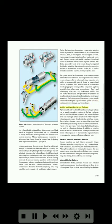Muffler and heat exchanger failures: approximately half of all muffler and heat exchanger failures can be traced to cracks or ruptures in the heat exchanger surfaces used for cabin and carburetor heat sources. Failures in the heat exchanger surface, usually in the outer wall, allow exhaust gases to escape directly into the cabin heat system. These failures, in most cases, are caused by thermal and vibration fatigue cracking in areas of stress concentration. Failure of the spot welds that attach the heat transfer pins can result in exhaust gas leakage. In addition to a carbon monoxide hazard, failure of heat exchanger surfaces can permit exhaust gases to be drawn into the engine induction system, causing engine overheating and power loss.